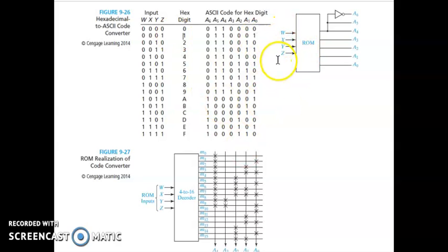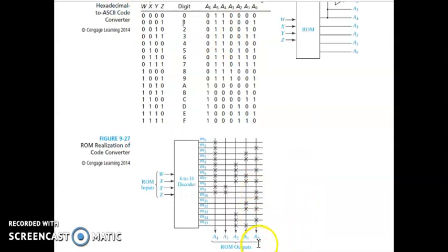Here is the code converter realized using ROM. The inputs are 4 inputs with 16 outputs and 4-to-8 decoders. The connections show which particular bit is high or low. For example, A4 is high till minterm 9, and from 10 onwards it is open circuit. This shows how ROM realizes the code converter.